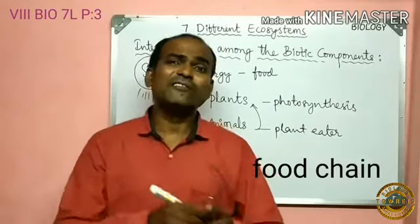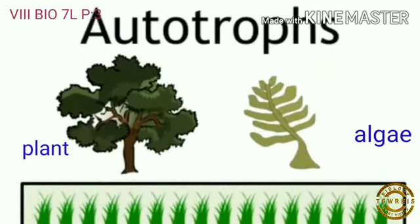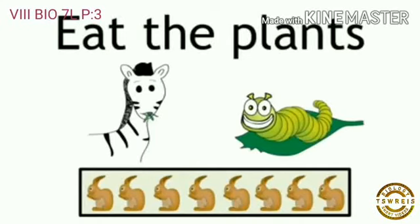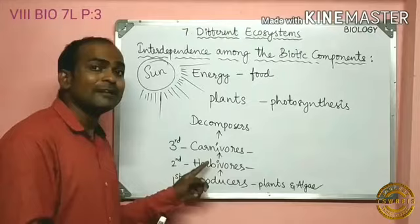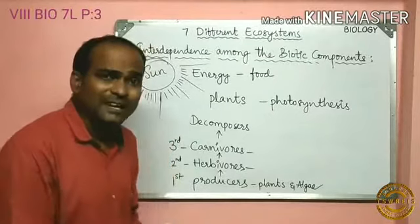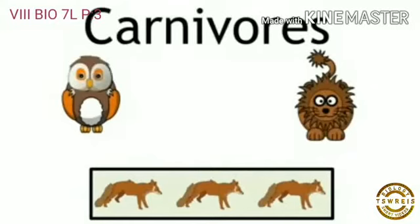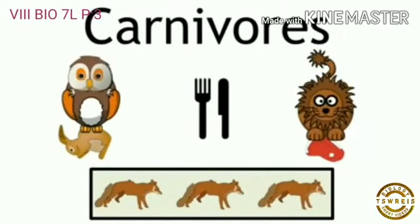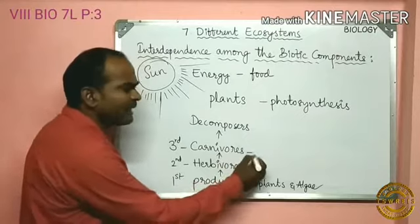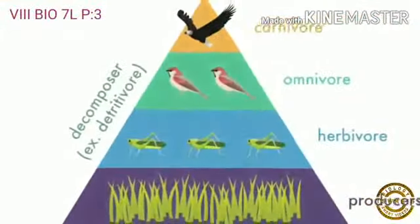There are different feeding levels in a food chain. Plants and algae, which utilize sunlight to make food, occupy the first level — these are called producers. Animals that eat these producers occupy the second level — those are called herbivorous animals. Animals that eat these herbivores occupy the third level — those are called carnivores. Carnivores and herbivores are both called consumers.